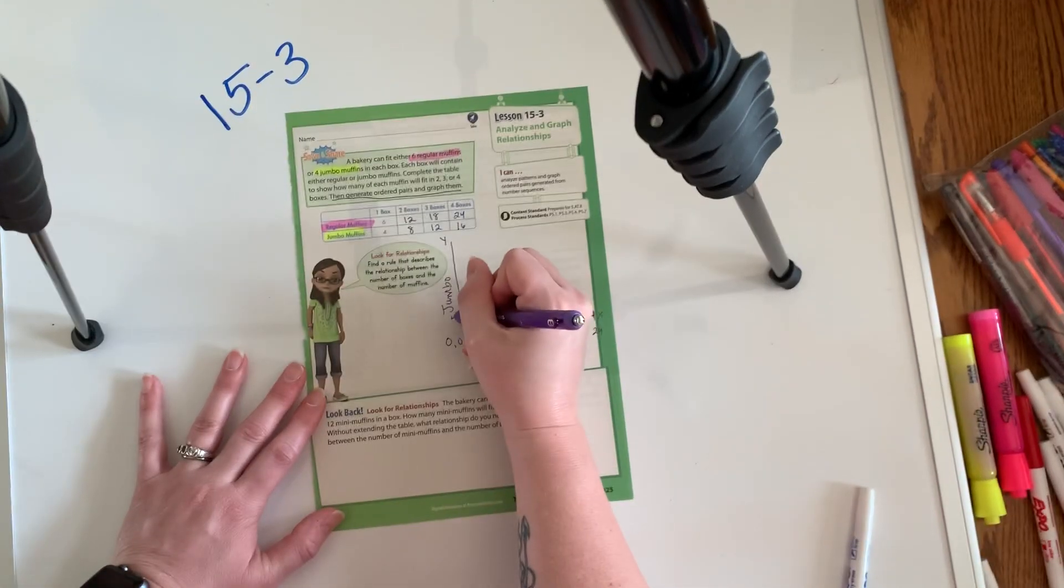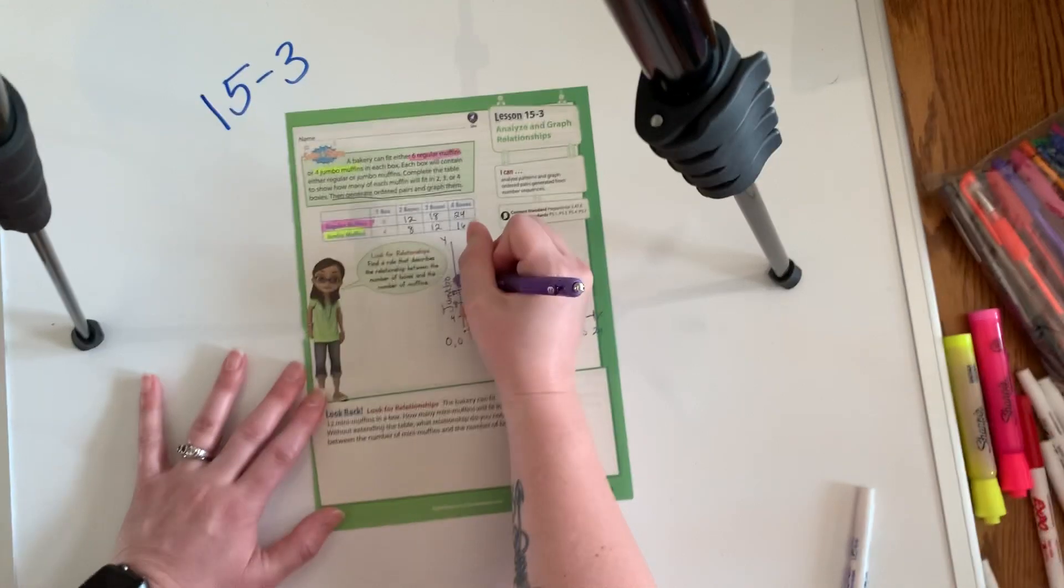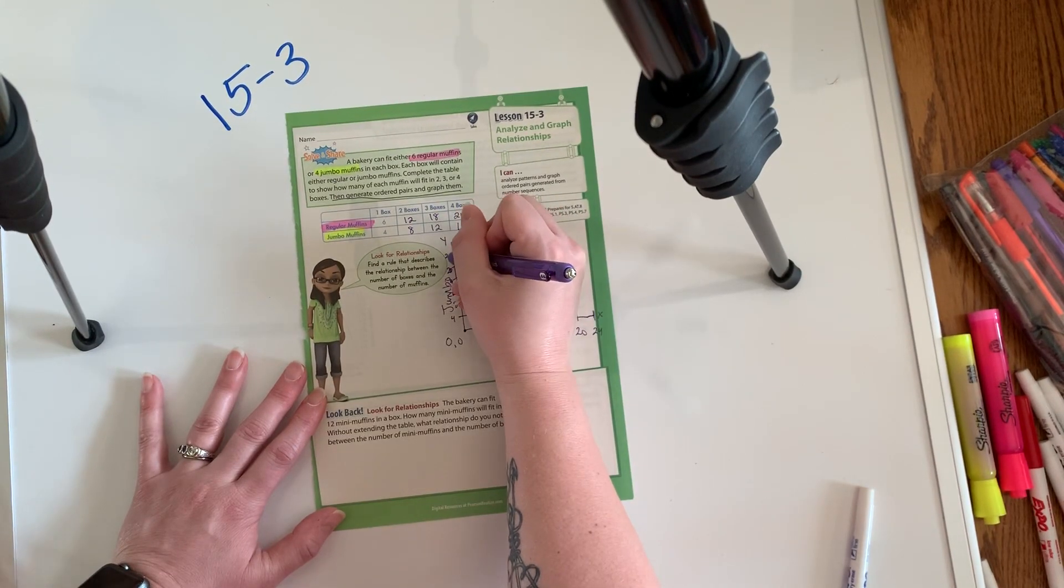And then the same thing going up four, eight, 12, 16, 20, and 24.